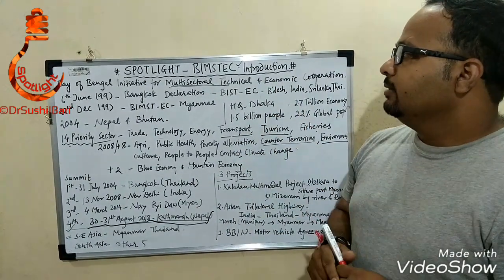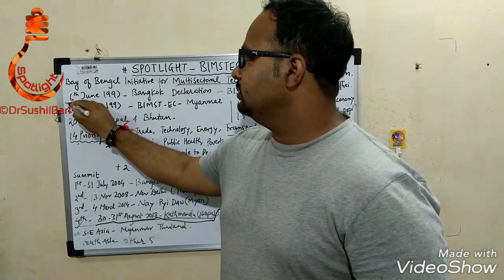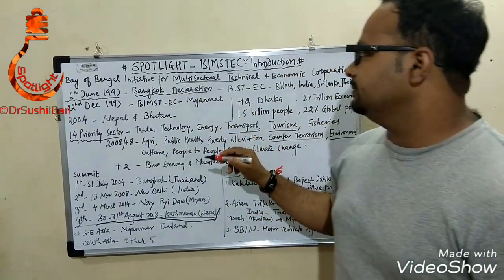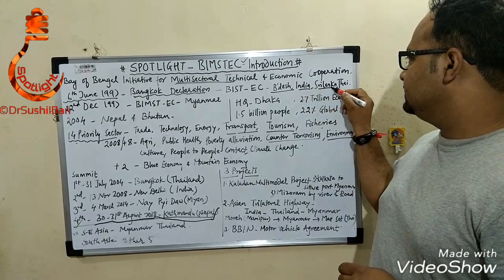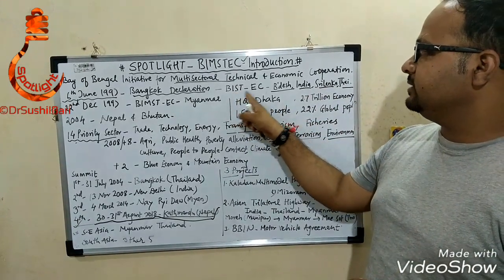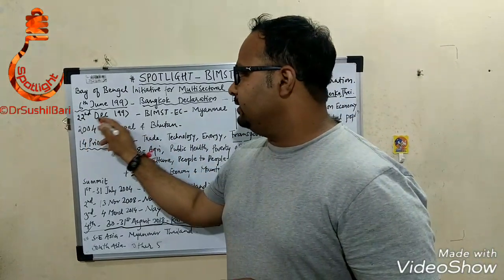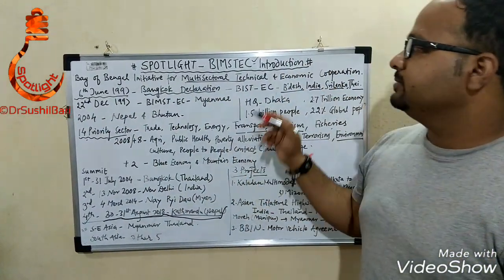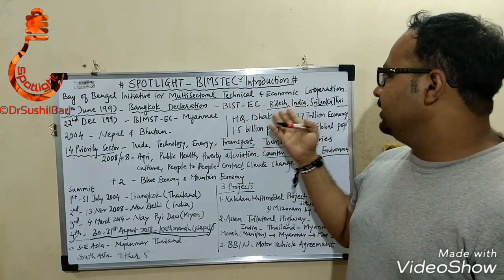BIMSTEC was established on 6th June 1997 by the Bangkok Declaration. Initially there were four countries — Bangladesh, India, Sri Lanka, and Thailand — and it was known as BISTEC, with EC standing for economic cooperation. On 22nd December 1997, Myanmar was added to BIMSTEC, so the member countries became five: Bangladesh, India, Sri Lanka, Thailand, and Myanmar.